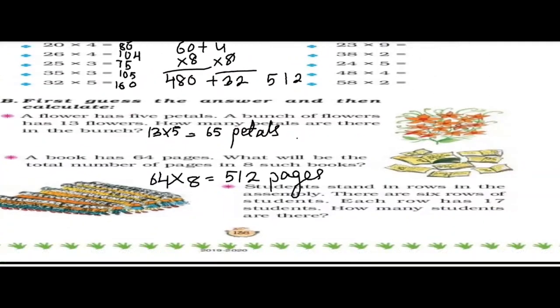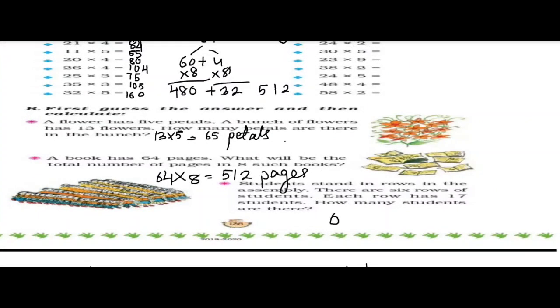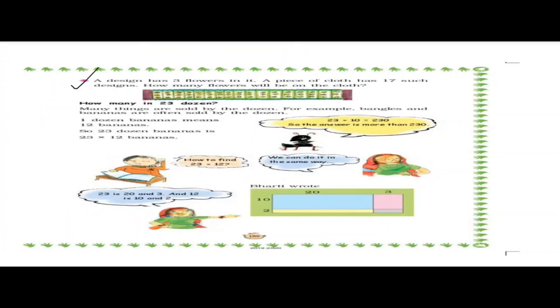Students stand in rows in the assembly. There are 6 rows and each row has 17 students. You will multiply 6 with 17 to find the total number of students — do the multiplication by yourself as I have done many sums for you. The last question — a design has 3 flowers, a piece of cloth has 17 such designs, how many flowers will be on the cloth — also do this by yourself as home assignment.